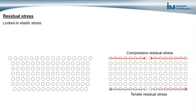Residual stresses in metals are locked-in elastic stresses. Elastic stresses refer to atoms in a metal that are stretching their atomic bonds, but there's no permanent deformation associated with the stress. Elastic stress is non-permanent deformation of a metal.